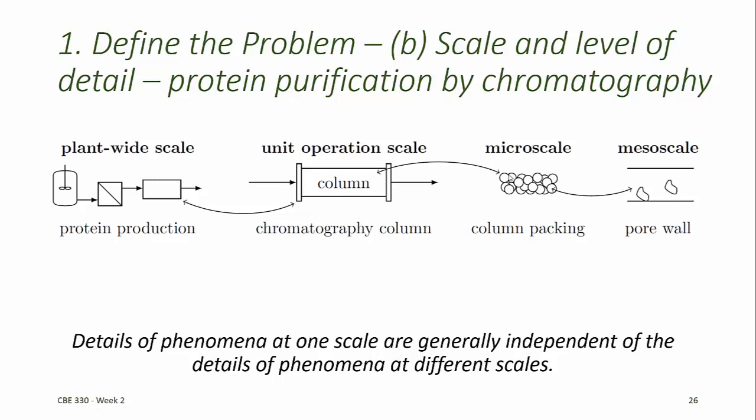Therefore, we sometimes use multi-scale modeling. In cases where we use multi-scale modeling, we often use a model at a smaller length scale to obtain a single parameter. Maybe in this case it's an equilibrium binding constant. And that equilibrium binding constant might be used at a larger length scale to describe what happens, for example, within the unit operation. The details of what goes on at the smaller length scales are unimportant at this scale, but that equilibrium binding constant wraps everything together so that we know how the system will behave.